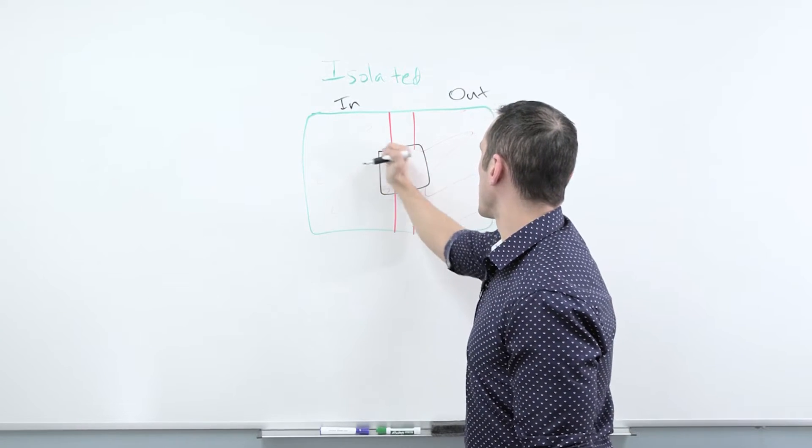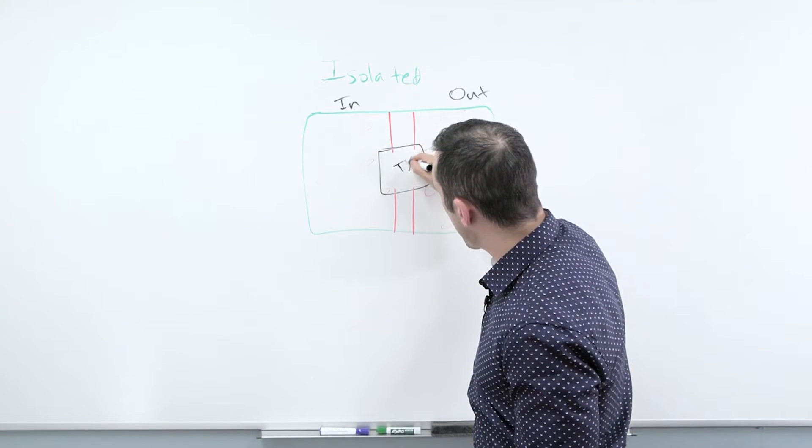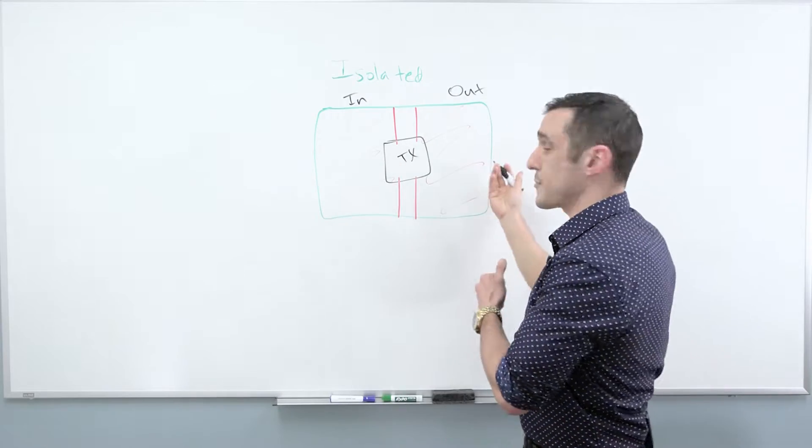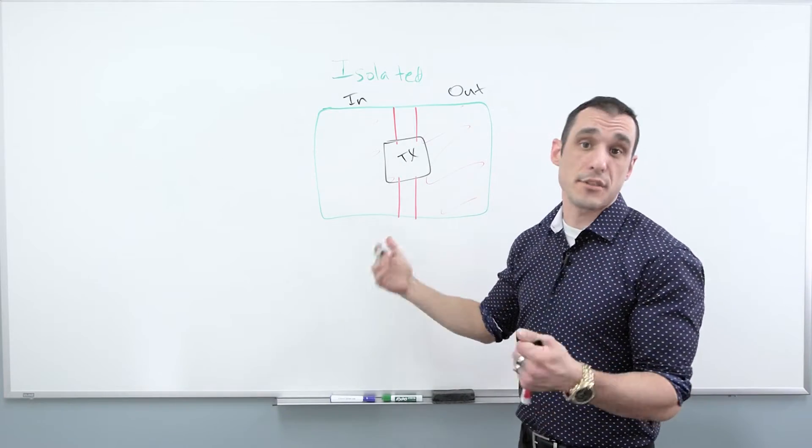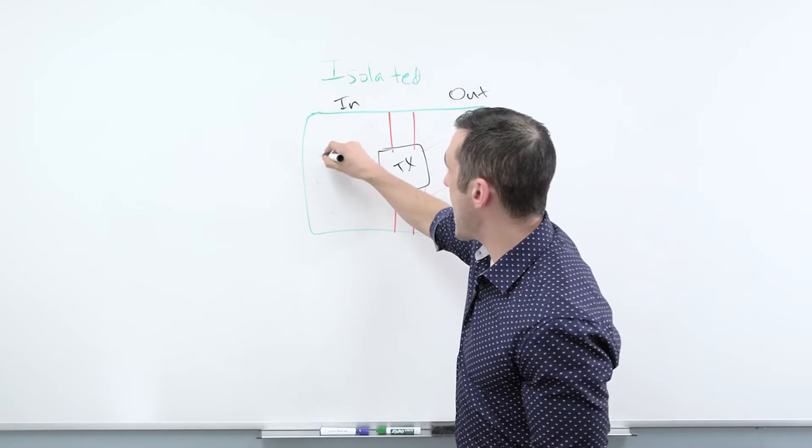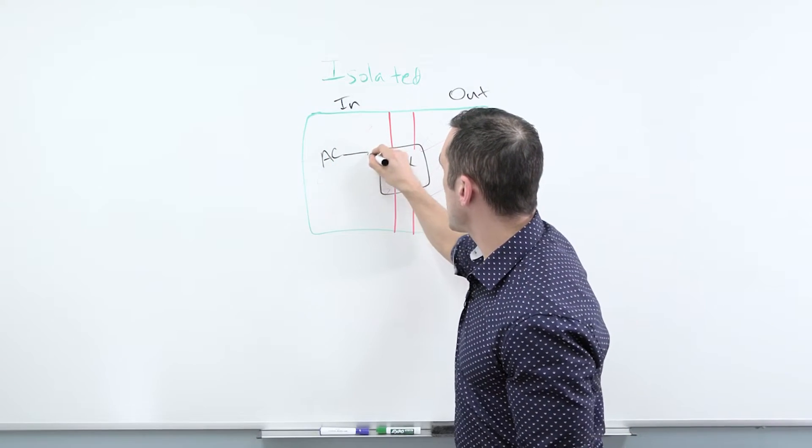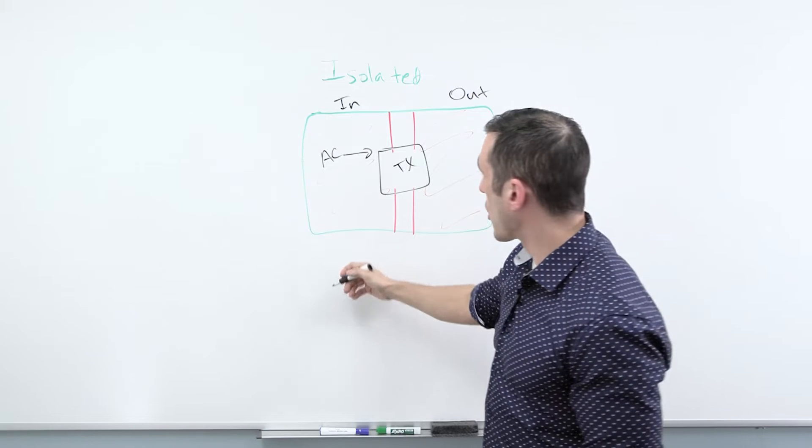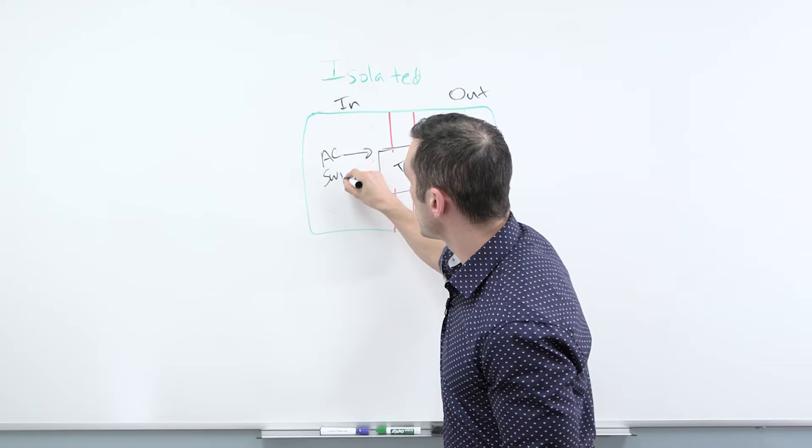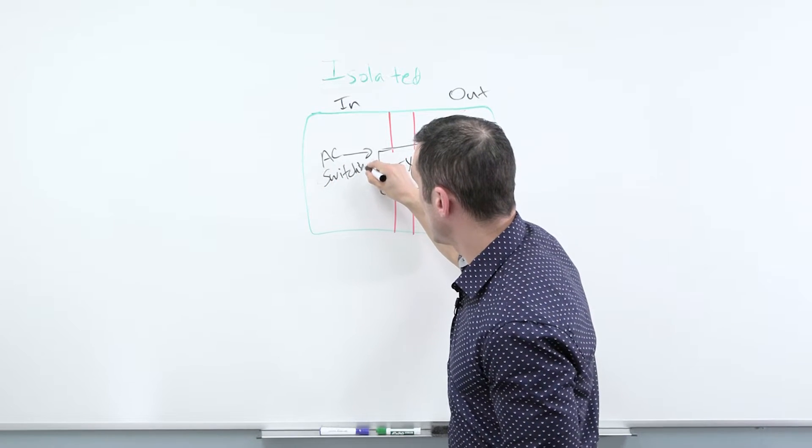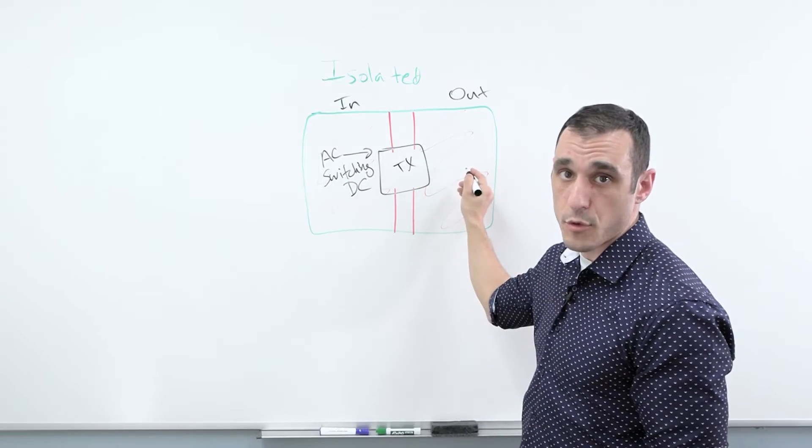You have to wonder, how do you get your input power over here over to your output side over here? This is generally done with the use of a transformer. So you'll have a transformer that basically bridges this gap, and the way it transfers power over to the other side is inductively through the magnetic field.